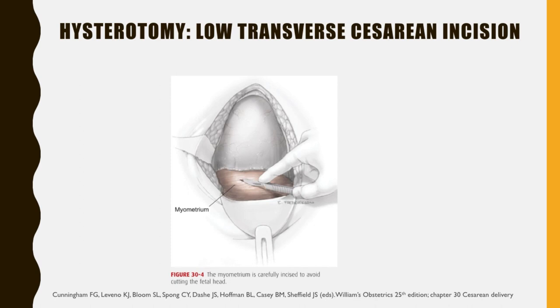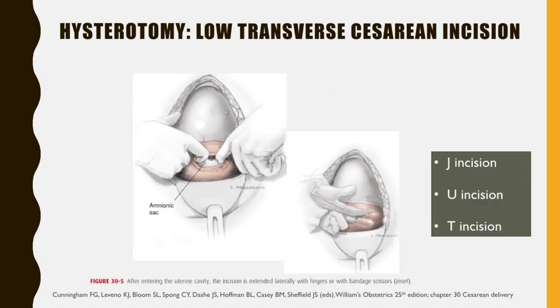The uterus can be incised by a variety of techniques, each initiated by using a scalpel to transversely incise the exposed lower uterine segment for one to two centimeters in the midline. This must be done carefully to avoid fetal laceration. Once the uterus is opened, the incision can be extended by spreading it using lateral and slightly upward pressure with the index finger. Alternatively, if the lower uterine segment is thick, cutting laterally and then slightly upward with bandaged scissors would extend the incision. When scissors are used, the index and middle fingers of the non-dominant hand should be insinuated beneath the myometrium and above the fetal parts to prevent fetal laceration.